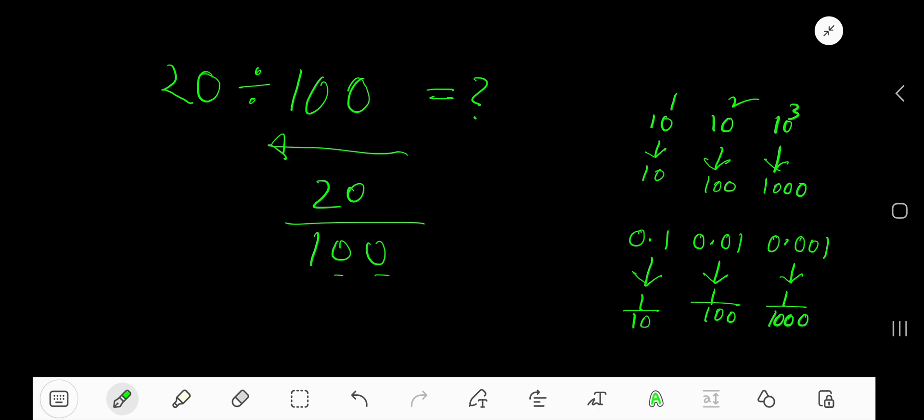The number of zeros is 2, so the decimal point will move 2 digits from right to left. Since this is a whole number, the decimal point first appears here at the right end.